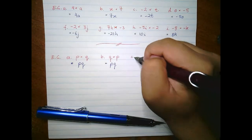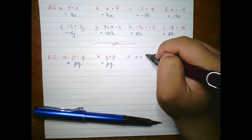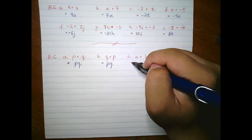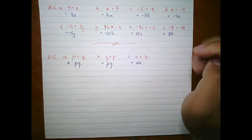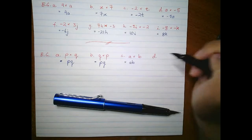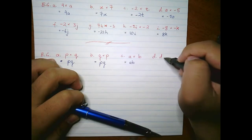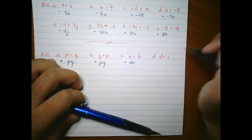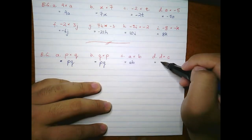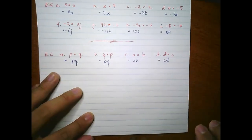For example c, if we had a times b, that's simply ab right next to each other. For example d, if we had d times c, this becomes cd right next to each other — they merge into one term, kept in alphabetical order.